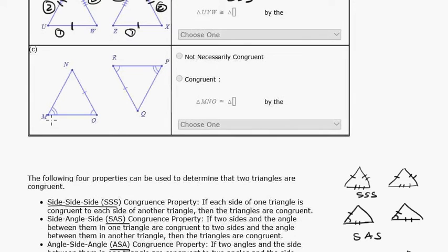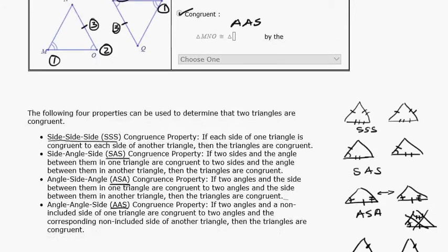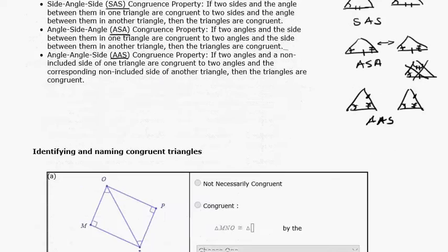Now here we have angle, angle, those two, and then another angle and then a side. All right, so angle, angle, side. So I would say those are congruent by angle, angle, side. Okay? That was the last one we did.